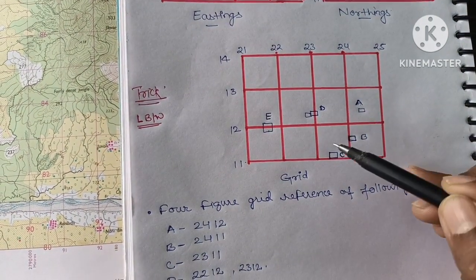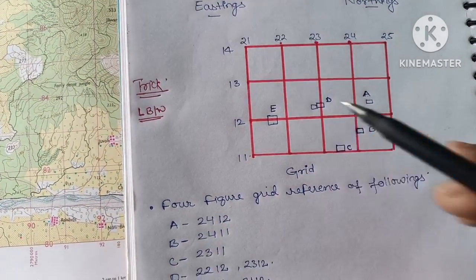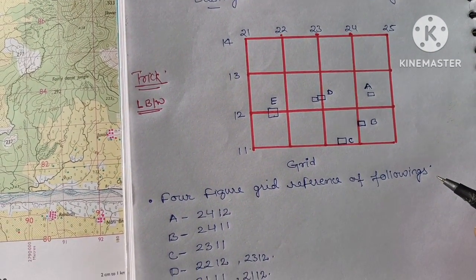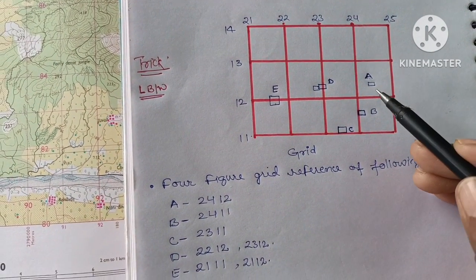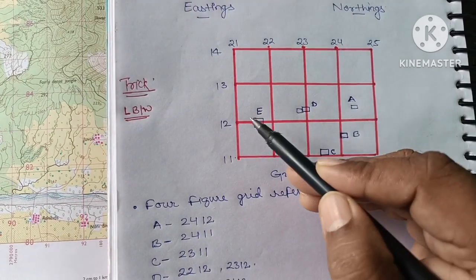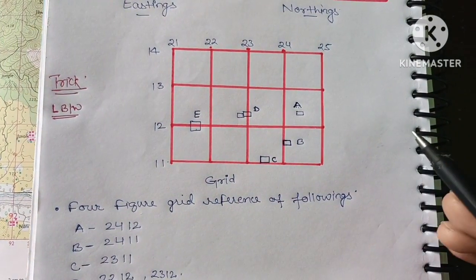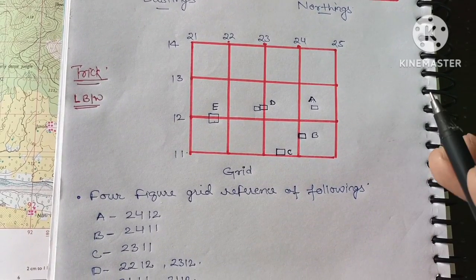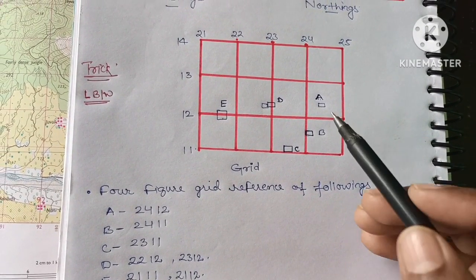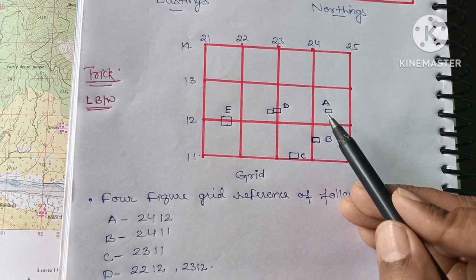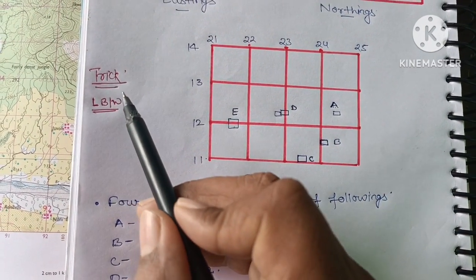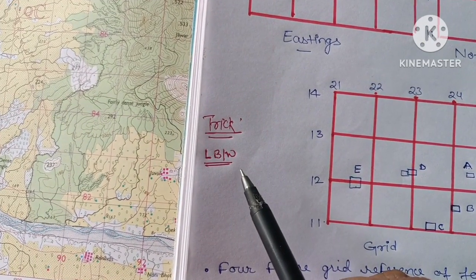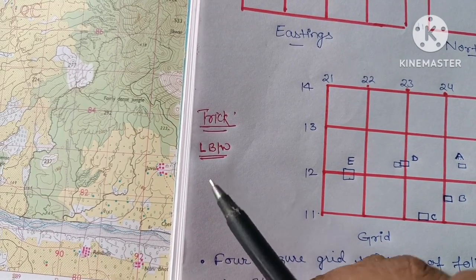From this, we are going to find out four-figure grid reference. I have given mark point A, B, C, D, E. I hope these are all the cases which will be asked in your exam. This is the probability of this concept only. For finding four-figure grid reference, we are using a trick called LBW.